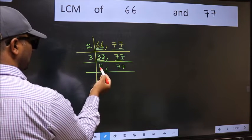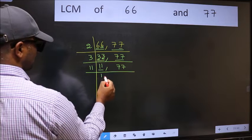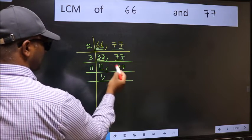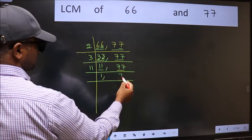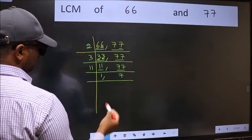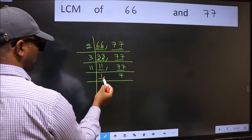Now we have 11. 11 is a prime number, so 11 divided by 11 is 1. The other number is 77. When do we get 77 in the 11 table? 11 times 7 is 77.